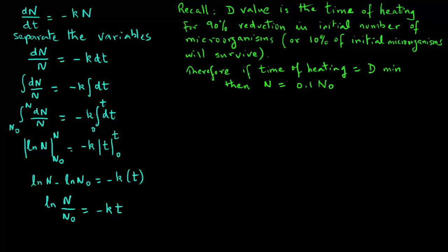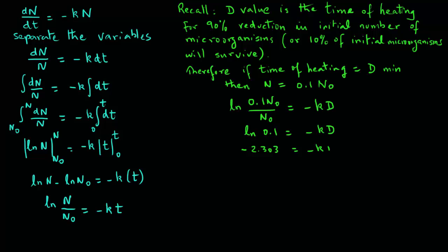We can substitute N equals 0.1 times N zero into our expression. We have natural log of 0.1 times N zero divided by N zero equals minus K times D. N zero cancels on the left-hand side, giving natural log of 0.1 equals minus K times D. The natural log of 0.1 is minus 2.303, so 2.303 equals K times D. Therefore, D equals 2.303 divided by K, or equivalently K equals 2.303 divided by D. We can use these expressions to convert one value into the other.